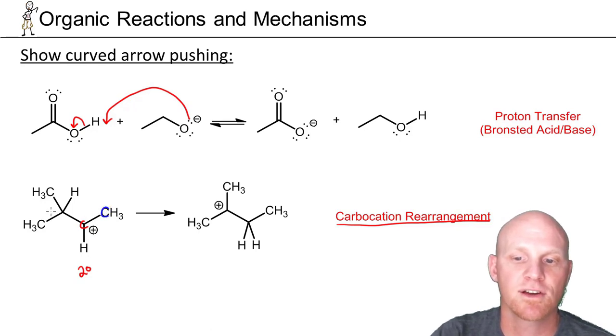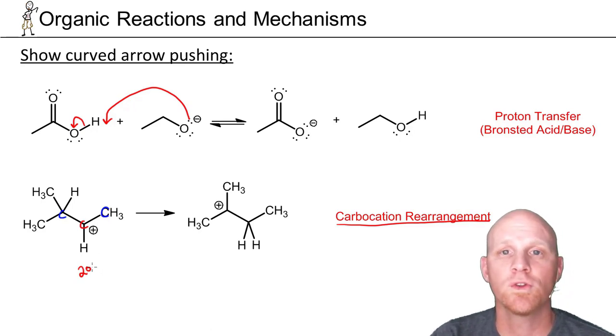It turns out when you've got a carbocation, it might rearrange, but typically only to an adjacent carbon. In this case, I've got two adjacent carbons being a secondary carbocation. Those are the only ones I'll consider.